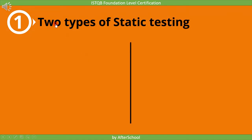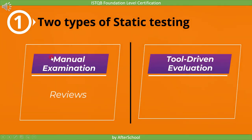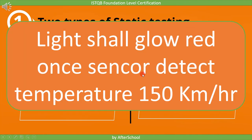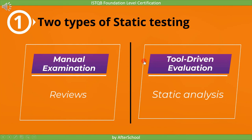We can perform static testing in two ways: manual examination and tool-driven evaluation. An example of manual evaluation is reviews, and tool-driven evaluation is static analysis. We read the requirement and found a few mistakes manually — this type of static testing is called a review. Whereas if there is software that can find spelling mistakes and provide a report directly, such testing is called tool-driven examination because the tool helped us find the mistake. This comes under static analysis. So, we can perform static testing by reviewing the work product (manual examination) or by static analysis (tool-driven examination).